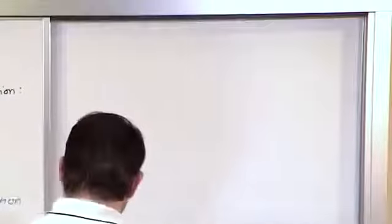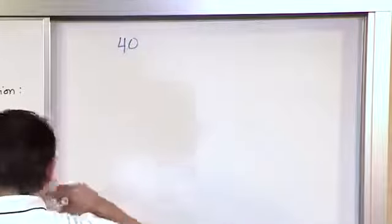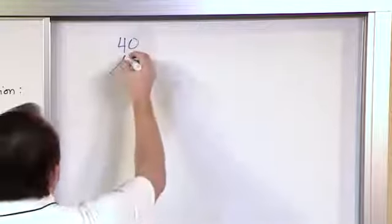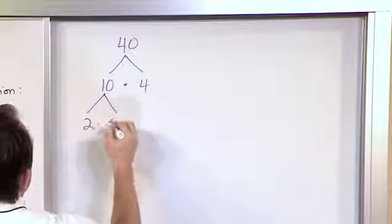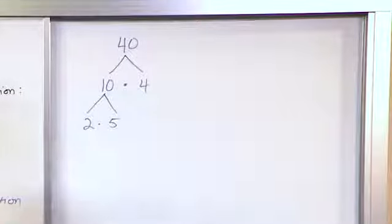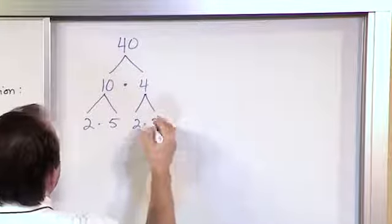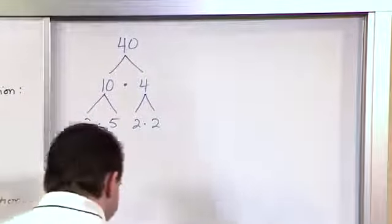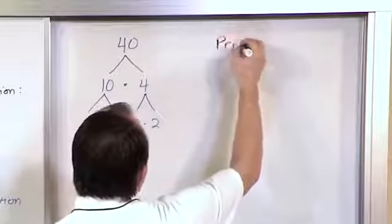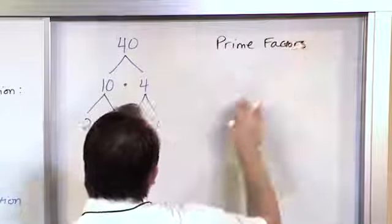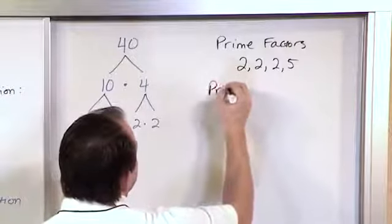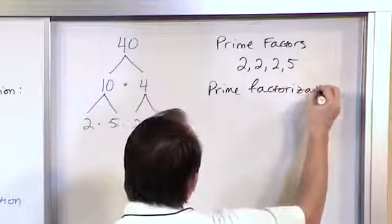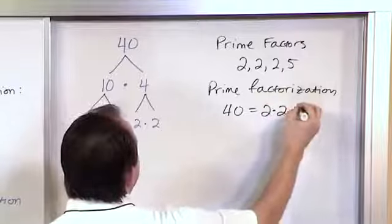For the final problem, let's take the number 40 and find its prime factors. I'll start with the first thing that comes to mind: 10 times 4 is 40. Then I look at 10 and do 2 times 5. The number 2 is prime and the number 5 is prime — 1 times 5 is the only thing that works, so that's done. For 4, we do 2 times 2, and 2 is prime. So the prime factors are 2, 2, 2, and 5. The prime factorization of 40 is 2 times 2 times 2 times 5.